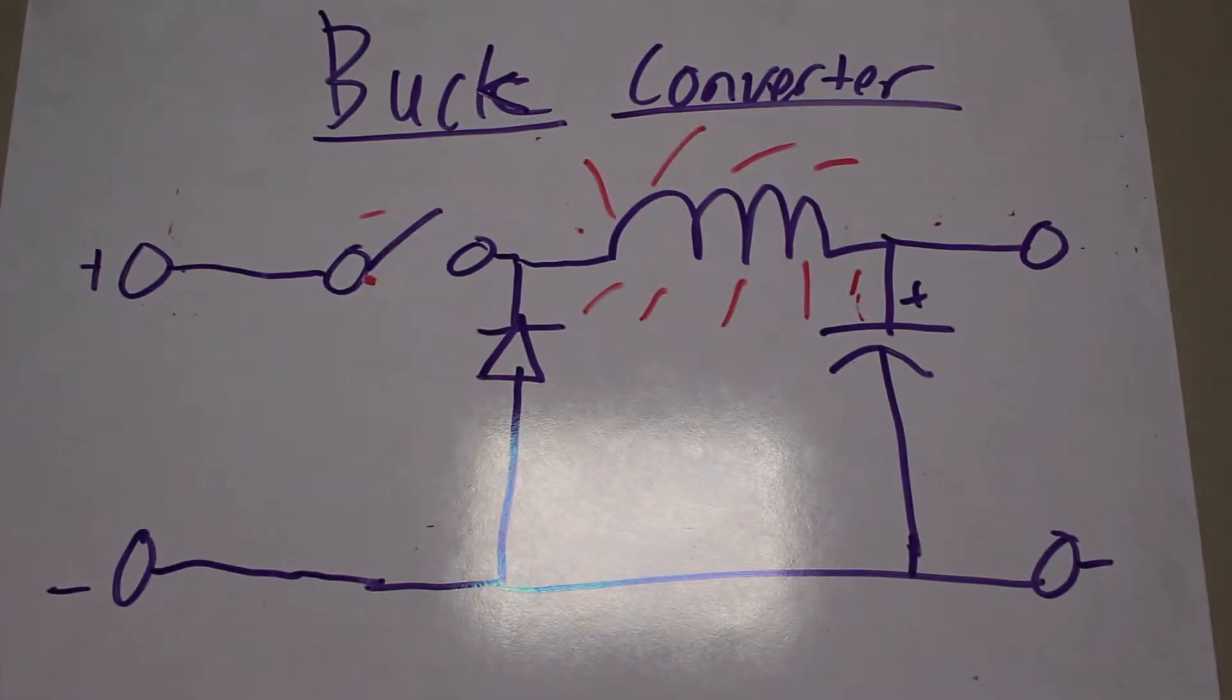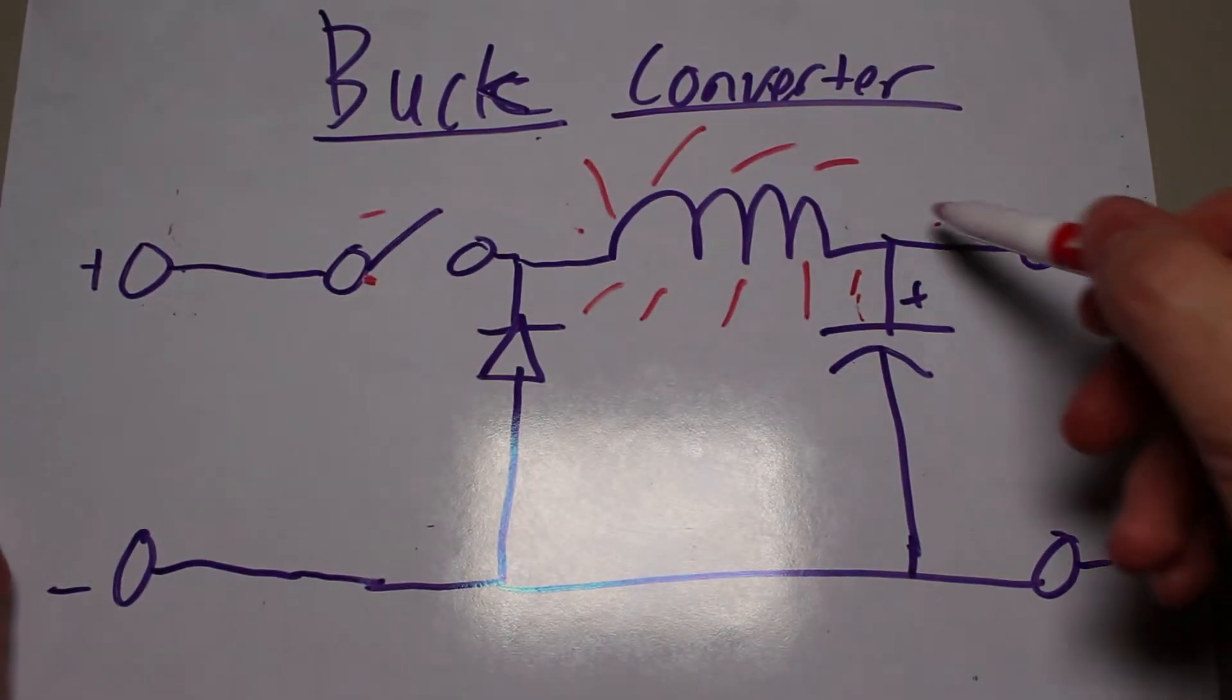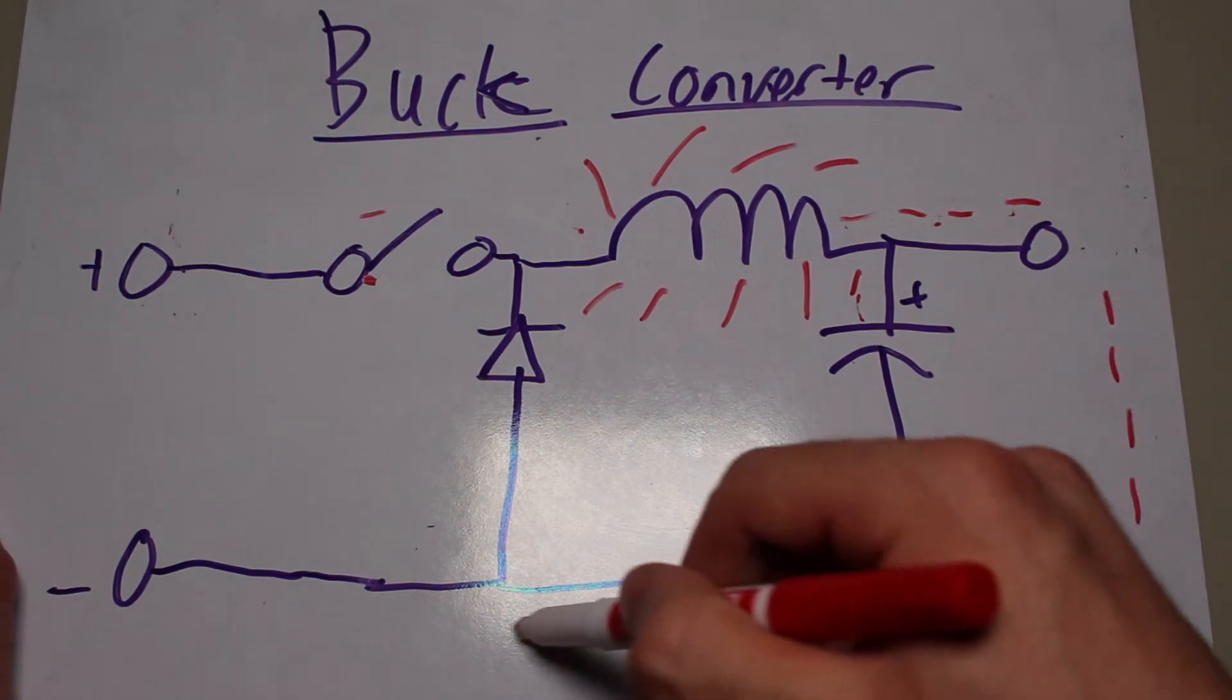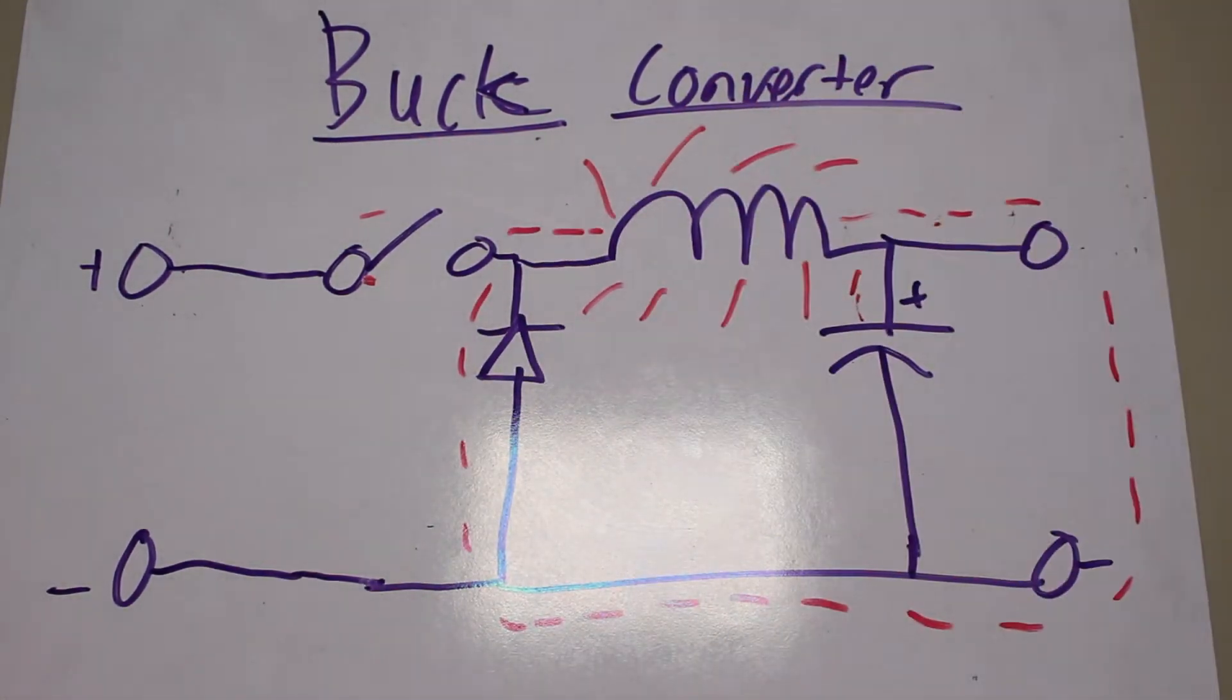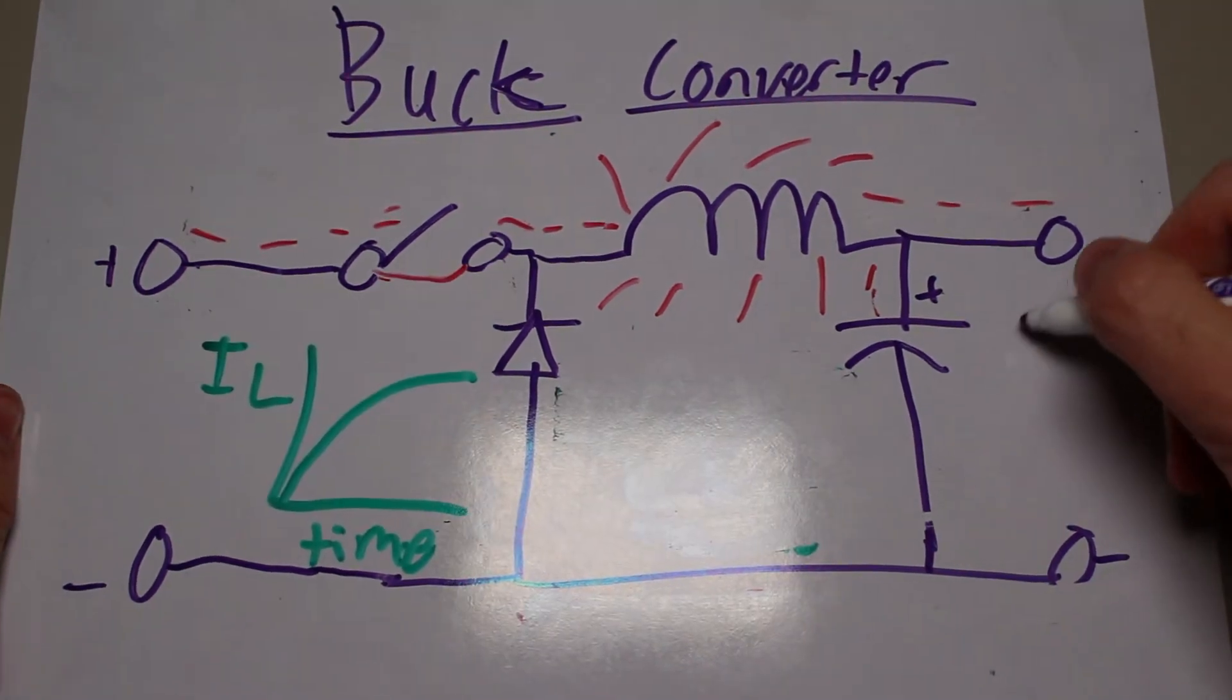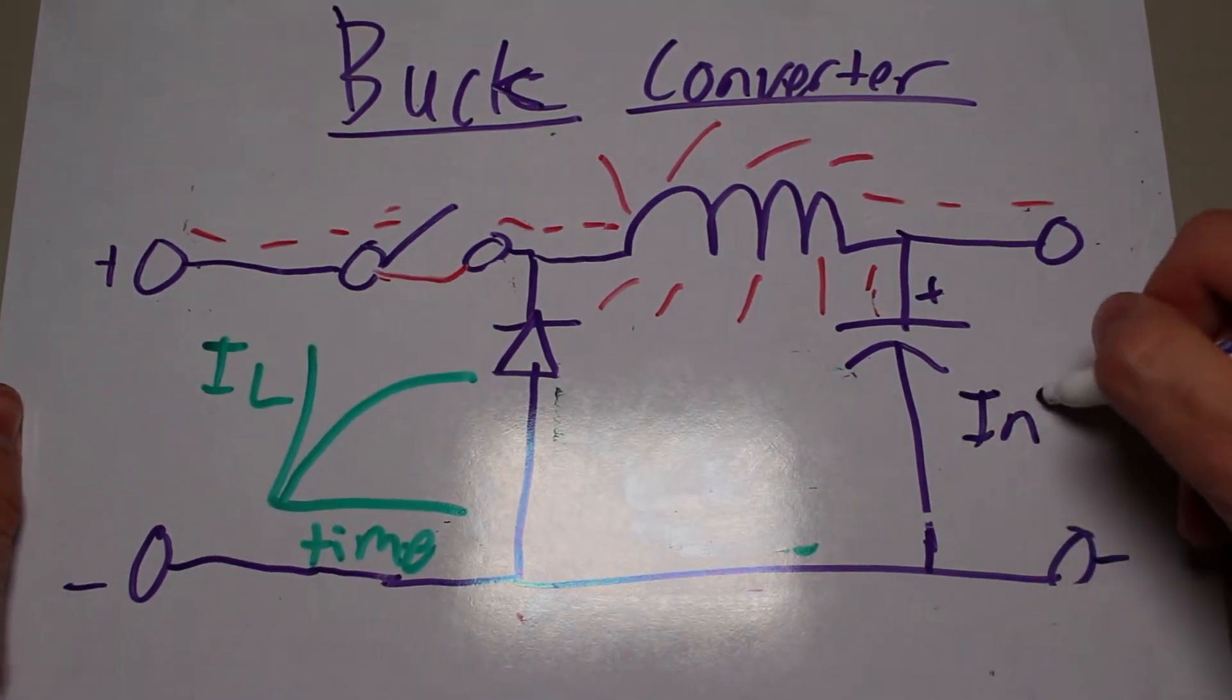We allow the inductor and the capacitor to discharge through the load. The diode is in place to allow the inductor to discharge through itself but not allow the voltage source to short circuit when the switch is closed. This repeated process overall will generate a lowered voltage from the perspective of the load.